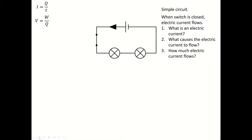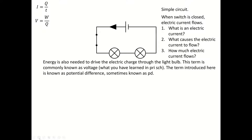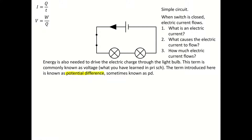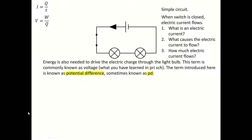What causes the electric current to flow? This time around we need to know the energy needed to drive the electric charge through the light bulb. For this specific example, this term is what you commonly know in primary school as voltage, but now I introduce this term — known as potential difference, sometimes written as PD. It refers to the energy needed to drive one coulomb of electric charge through one bulb.